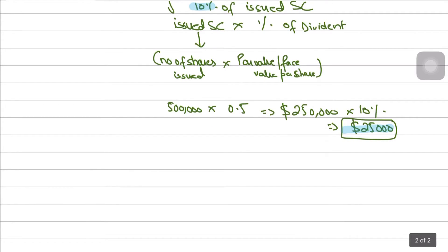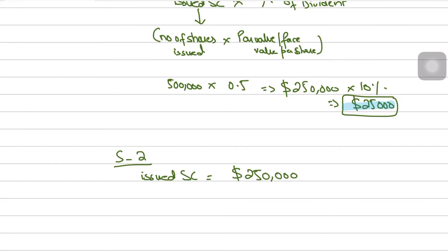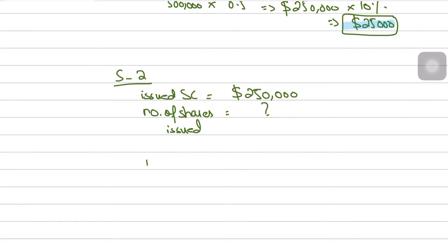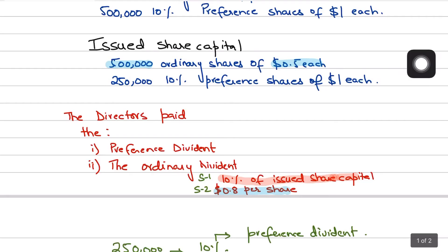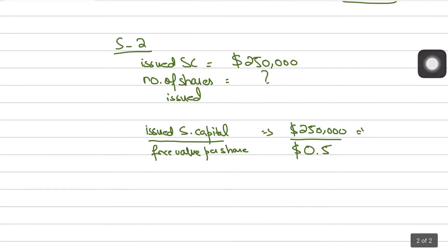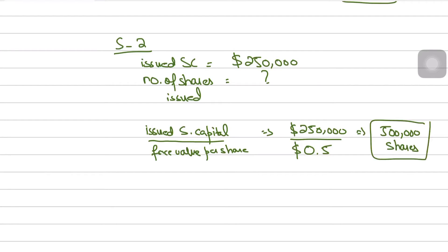However, if the number of ordinary shares is not given and only the issued share capital of $250,000 is provided, you calculate the number of shares by dividing the issued share capital by the face value per share. So $250,000 divided by $0.50 gives 500,000 shares.